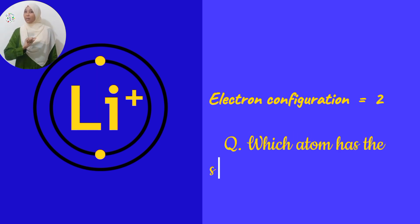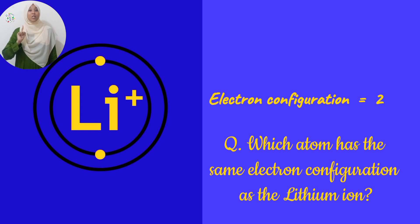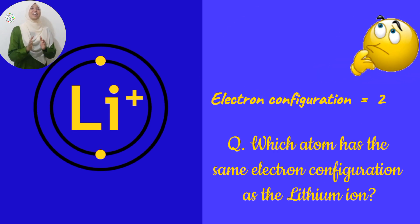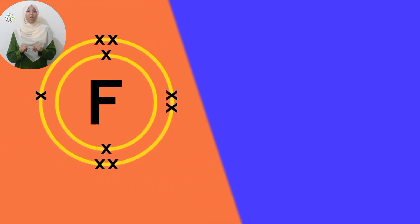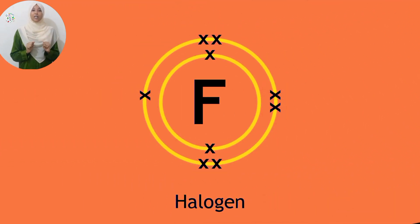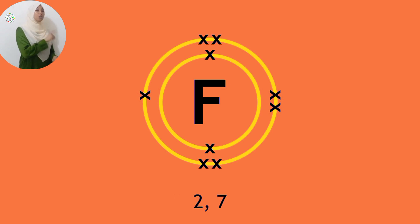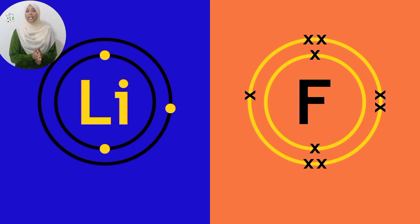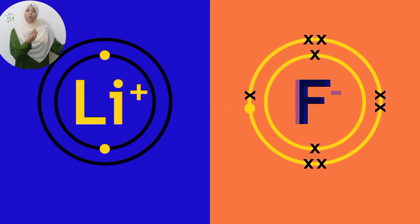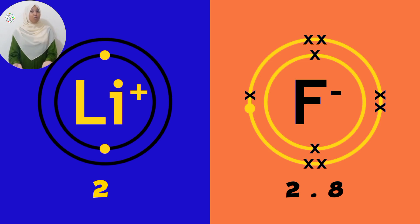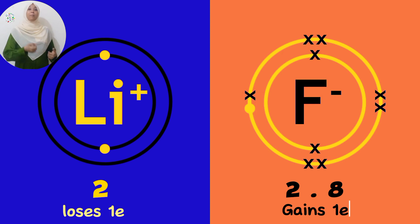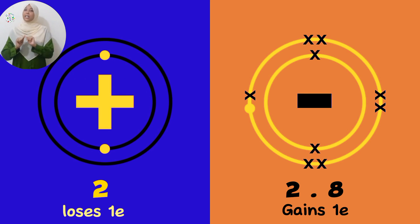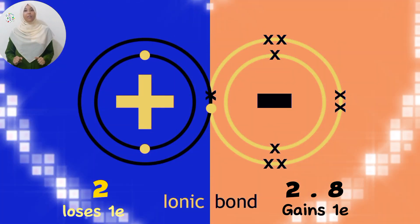Quick question: the ion of lithium has an electron configuration of 2, which is similar to the atom of — fill in the blank. Now moving on to fluorine. Fluorine belongs to the same group as chlorine and has 9 electrons, giving an electronic configuration of 2, 7. It needs 1 more valence electron to become stable. Lithium loses 1 electron, which is transferred to fluorine. Fluorine gains it to form an energy level of 2, 8, with a charge of negative 1, since it has 9 protons but 10 electrons. The fluorine ion has a negative charge, the lithium ion has a positive charge — we have our ionic bond.